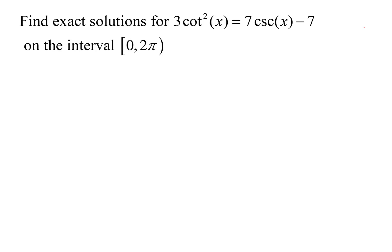Find exact solutions for 3 cotangent squared x equals 7 cosecant x minus 7 on an interval from 0 to 2 pi. So the first thing I see here is I've got two different trig functions. I've got one term that has cotangent x in it and one that has cosecant x.